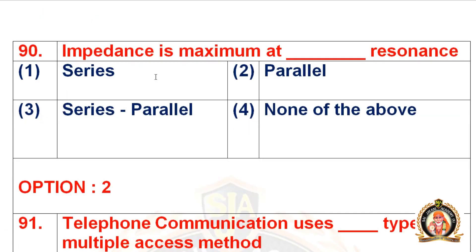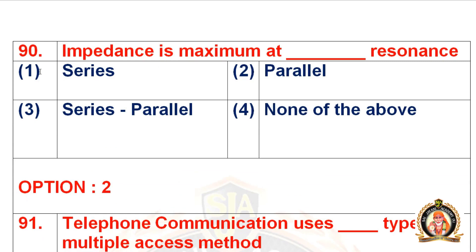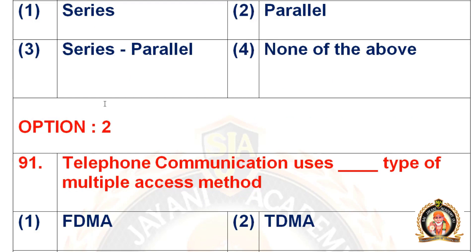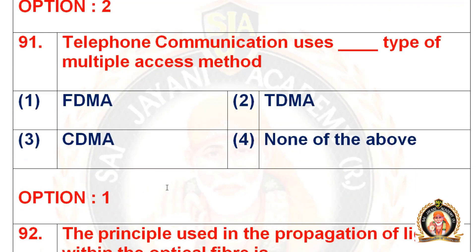Move on to the 90th question: impedance is maximum at dash resonance. Options: series, parallel, series-parallel, or none of the above. The right option is the second one — parallel. Impedance is maximum at parallel resonance, but in series resonance the impedance is minimum. For detailed solutions, visit our YouTube channel SaiGen Academy.